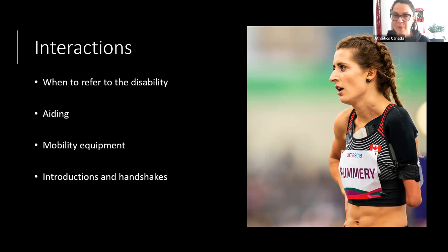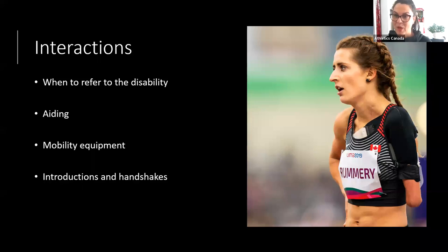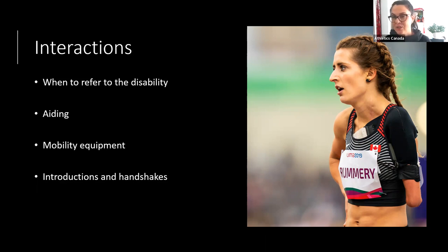People with limited hand use, amputations, or artificial limbs can still shake hands. If you extend your right hand and the athlete has no right hand, observe first and extend your left hand instead — no need to over-apologize, just adapt naturally. An elbow tap or other acknowledgement is fine too. For people with spinal cord injuries where hand function is more limited, a fist bump is often a good way to do that introduction.